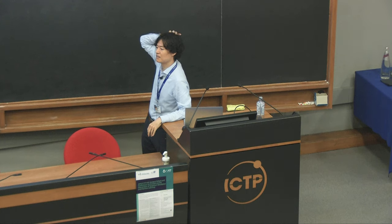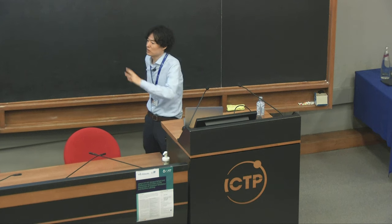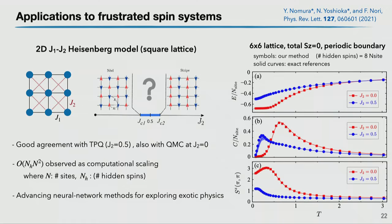For J2 equals zero, we can use quantum Monte Carlo as reference. For the moment, I have not studied the system-size dependence in detail. The computational cost depends on how many hidden units we need to introduce — if we need a much larger number of hidden units, the computational cost grows substantially, but we do not yet know the precise scaling.